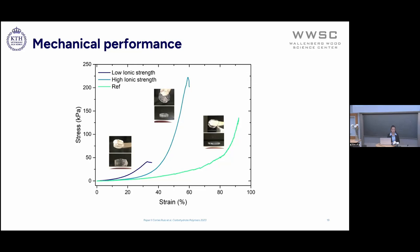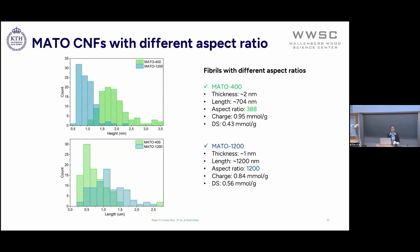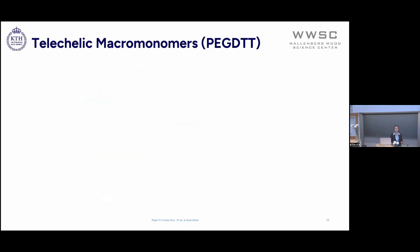Now we know that we can make these materials and can have different properties with different polymers and solutions. To understand the structure-property relationships of polymer-linked networks, we used two types of CNFs and two types of polymers. The CNFs were modified the same way but have different aspect ratios — one at 400 and one at 1200. For the polymers, I wanted to use telecalic macromonomers, meaning molecules with two reactive units, to test the crosslinking density and its effect on mechanical properties. I also wanted something aqueous-based, degradable, and biocompatible for biomedical applications.